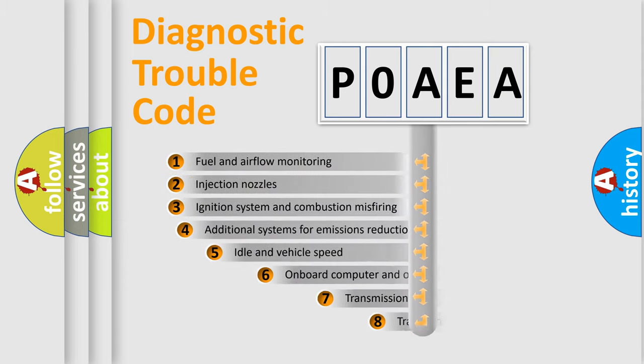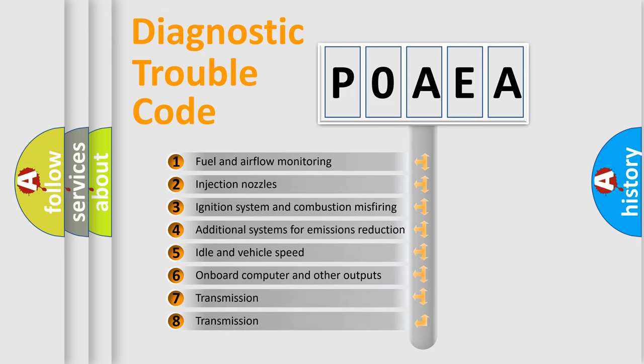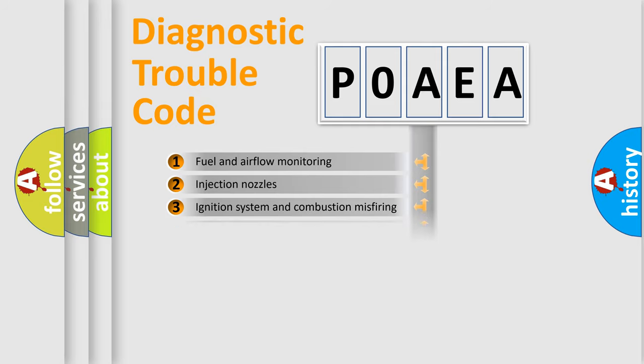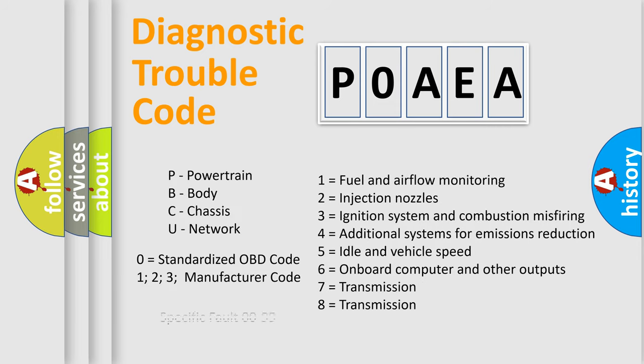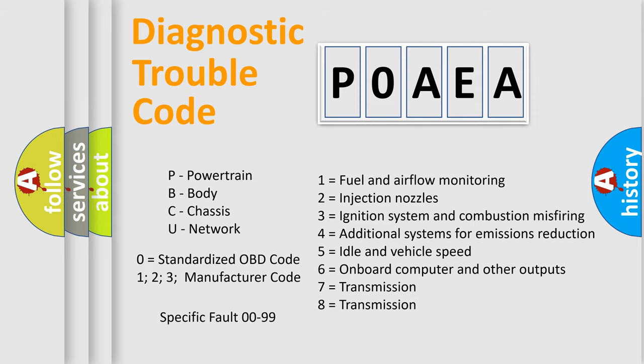The third character specifies a subset of errors. The distribution shown is valid only for the standardized DTC code. Only the last two characters define the specific fault of the group. Let's not forget that such a division is valid only if the second character code is expressed by the number zero.